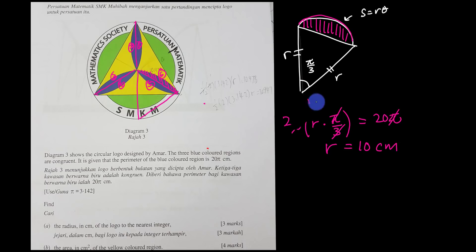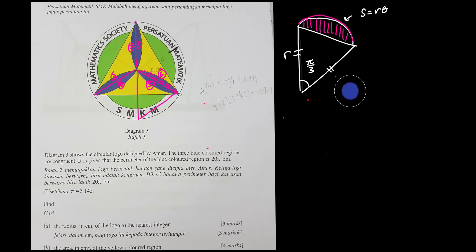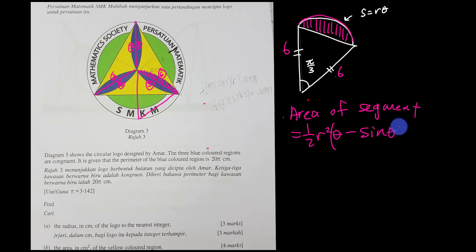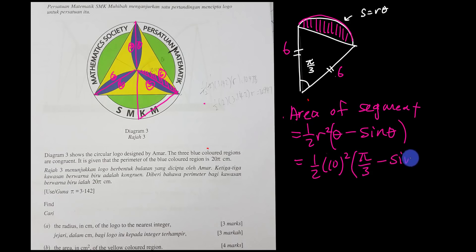Since r = 10, I'll find the area of one segment using the formula: Area of segment = ½r²(θ − sin θ). With r = 10 and θ = π/3, this becomes ½ × 100 × (π/3 − sin(π/3)).